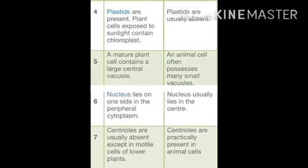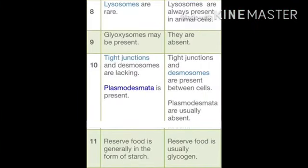In plant cells, the nucleus lies on one side in the peripheral cytoplasm; in animal cells, the nucleus usually lies in the center. Centrioles are usually absent in plant cells except in motile cells of lower plants, but centrioles are present in animal cells. Lysosomes are rare in plant cells whereas lysosomes are always present in animal cells. Glyoxysomes may be present in plant cells but are absent in animal cells.